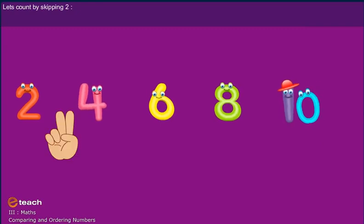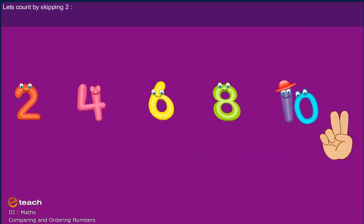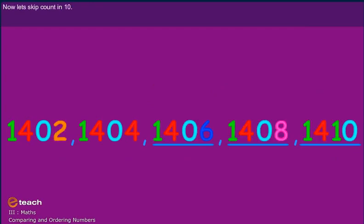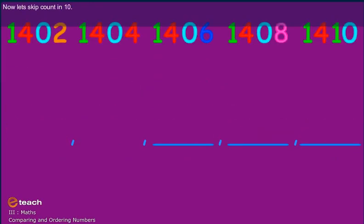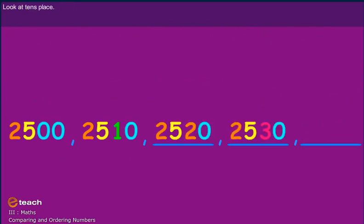Let's count by skipping two. Look at the digits in the ones place. Now let's skip count by ten — look at the tens place.